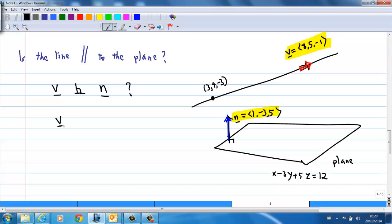You check whether v · n = 0. v is given by (8, 5, -1), n is given by (1, -3, 5). So, is the dot product equal to 0? Let's compute the dot product: 8 × 1, which is 8, plus 5 × -3, which is -15, plus -1 × 5, which is -5. And we know that this is not equal to 0.